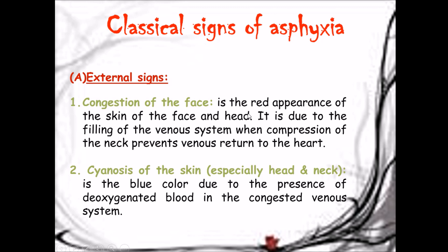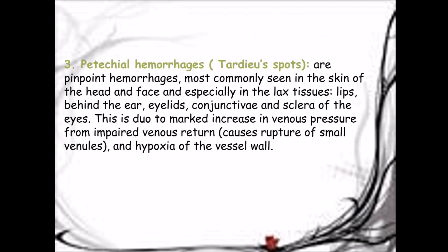The classical external signs of asphyxia include: first, congestion of the face — a red appearance of the skin of the face and head due to filling of the venous system when compression of the neck prevents venous return to the heart. Second, cyanosis — blue coloration due to the presence of deoxygenated blood in the congested venous system. Third, petechial hemorrhages called Tardieu spots — pinpoint hemorrhages most commonly in the skin of the head and face, especially in lax tissue like lips, behind the ear, eyelids, conjunctiva, and sclera, due to marked increase in venous pressure from impaired venous return causing rupture of small venules and hypoxia of the vessel wall.